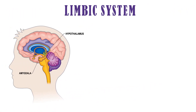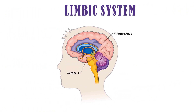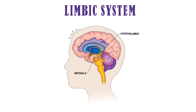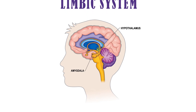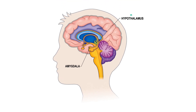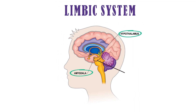The limbic system is a complex set of brain structures located on both sides of the thalamus. The limbic system consists of the hypothalamus, amygdala and hippocampus.